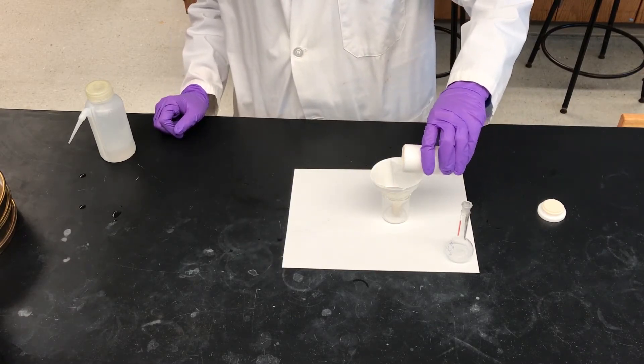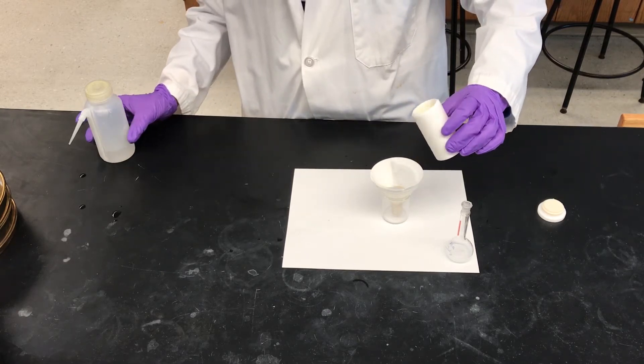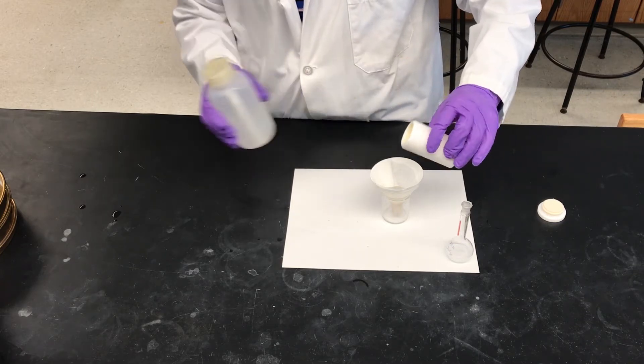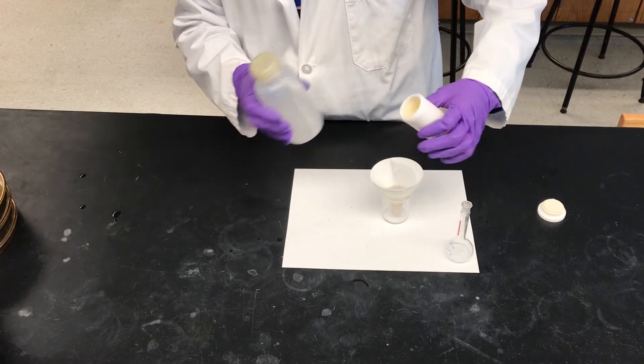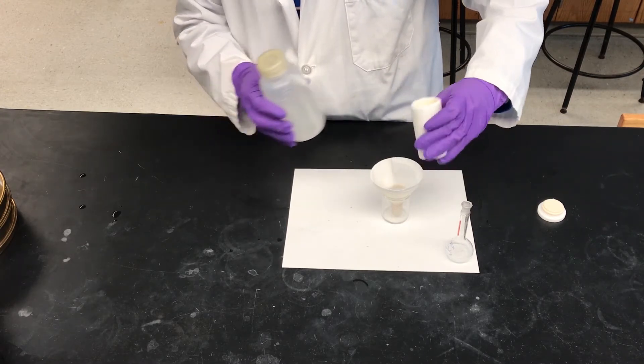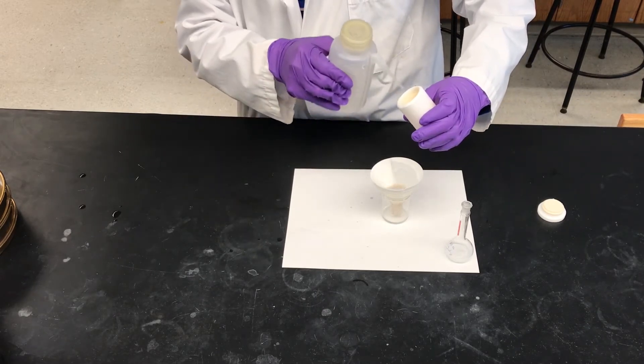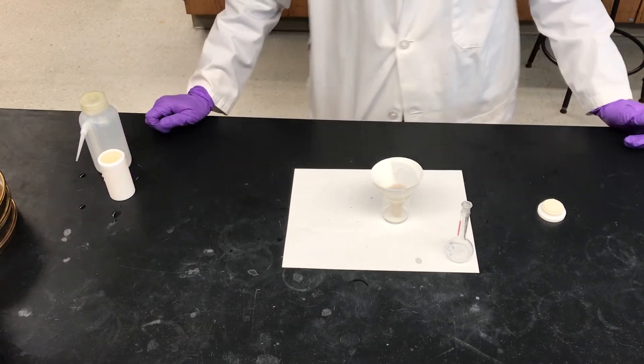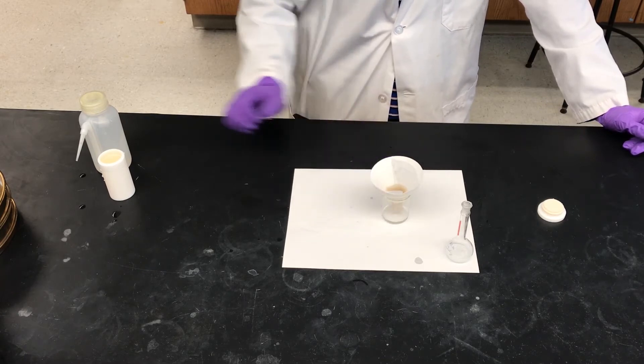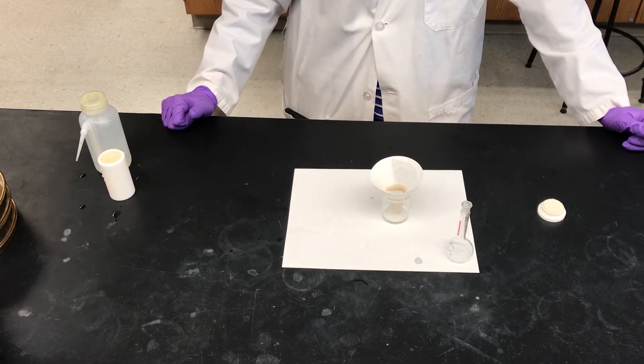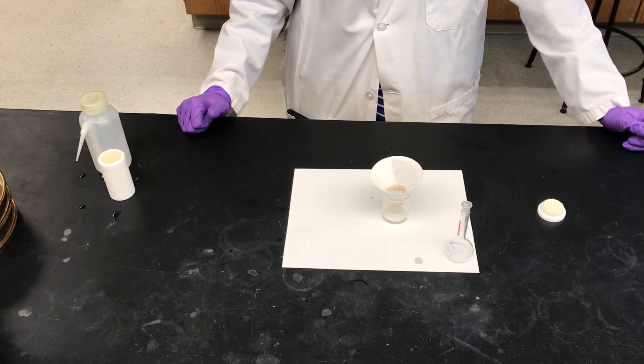So we just simply pour everything from the liner into our filter paper and we are going to rinse using very small quantities multiple times right into that filter paper. So that's three rinses, there's four, and those are just a few drops each. I'm going to let this filter and drain into our beaker here, and then once everything has been filtered, go on to the next step.